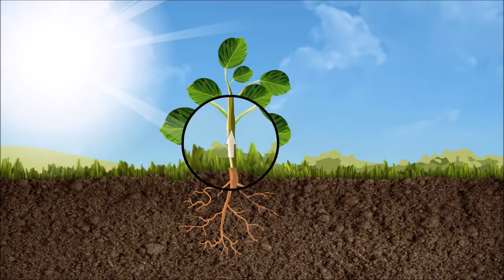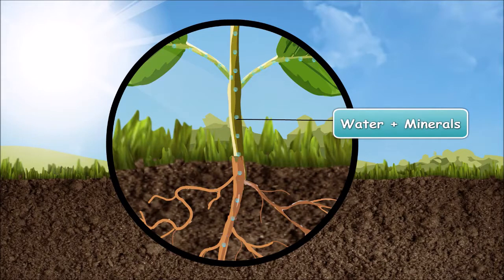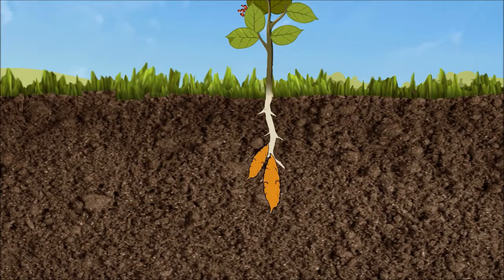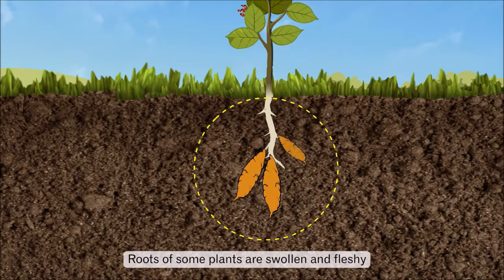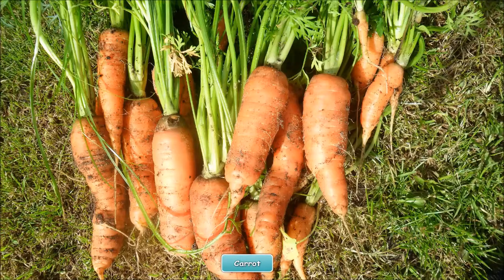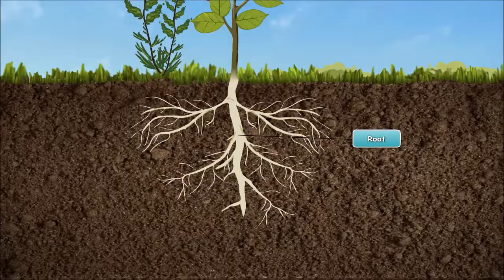Roots absorb water and minerals from the soil, which are then distributed to all other parts of the plant. Roots of some plants are swollen and fleshy in order to store food — for example, carrot and beetroot. Now you have learnt about the importance of roots. Let us now know about the different types of roots.